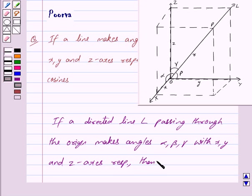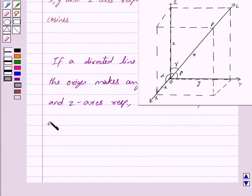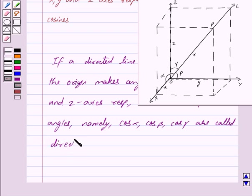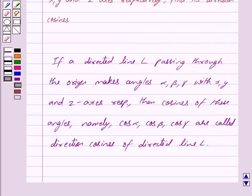then the cosines of these angles, namely cos alpha, cos beta and cos gamma are called direction cosines. So this is the key idea behind the question.